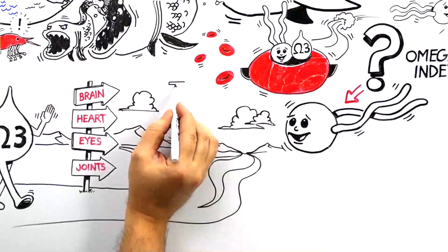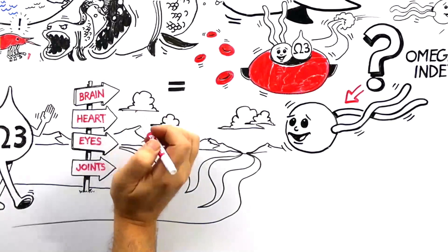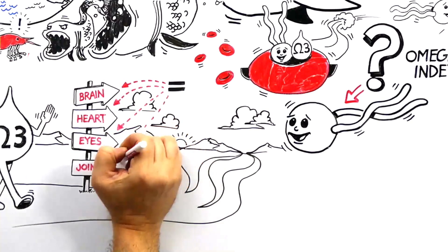The presence of Omega-3 fatty acids in red blood cells is a reflection of the amount of Omega-3s in your tissues and organs.